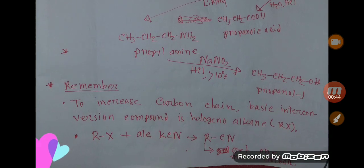Let me give you some basic idea about how to increase the number of carbons in the chain. To increase carbon chain, the basic interconversion compound is halogenoalkane. If you add alcoholic potassium cyanide (KCN) to alkyl halide, then you will get alkyl nitrile which has one more carbon than halogenoalkane.